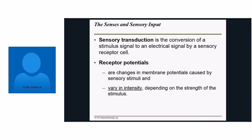Neurons have action potentials, while these receptors in our senses have receptor potentials, which happen in a similar way but can vary in intensity. If you eat food with a little bit of salt, your brain will integrate that it's a bit salty. But if you eat something full of salt, that increases the intensity of the stimulus — your brain will integrate that it's extremely salty — thanks to this receptor potential that can vary in intensity.